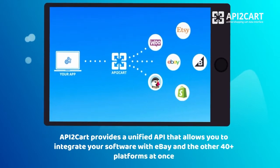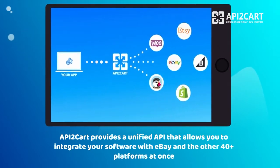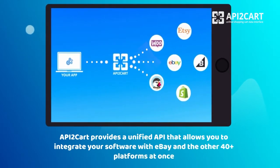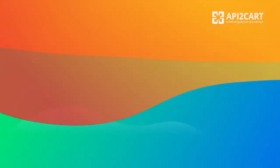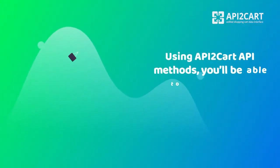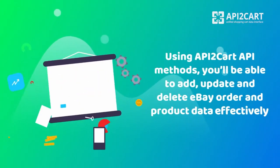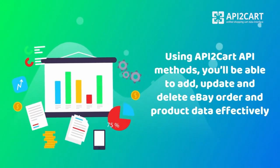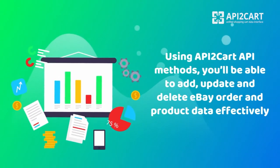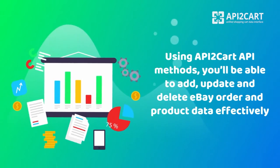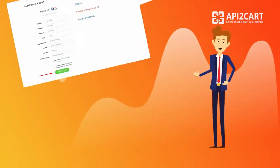API2Cart provides a unified API that allows you to integrate your software with eBay and the other 40-plus marketplaces and shopping platforms at once. Using API2Cart API methods, you'll be able to add, update, and delete eBay order and product data effectively.